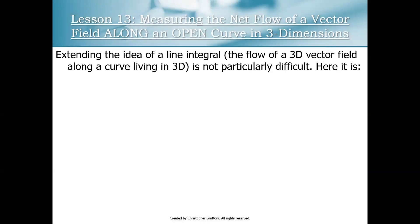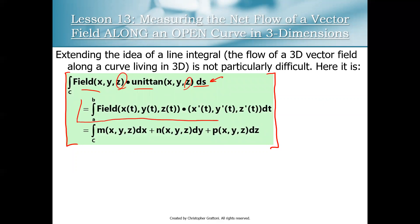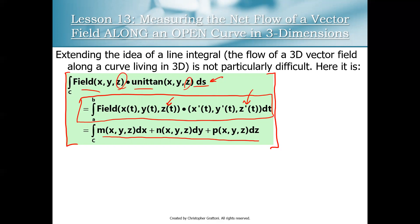To lift this up to three-dimensional space, we really don't have to do a lot of extra work. The idea of a path integral in three-dimensional space is pretty much identical to the notion of a path integral in two-dimensional space — I essentially copy-pasted the previous slide and modified it slightly. You can use the field dot unit tangent ds formula; you just have to add the z component for the vector field and the unit tangent vectors. My favorite formula remains the integral of field dot tangent, where our vector field now has z(t) and our tangent vector has z′(t). Or in compact notation: the integral of M dx + N dy + P dz.